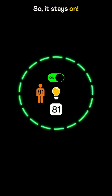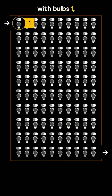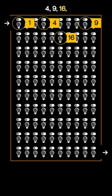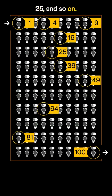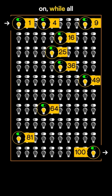So it stays on. The same happens with bulbs 1, 4, 9, 16, 25, and so on. These 10 bulbs, positioned at perfect square numbers, stay on while all others turn off.